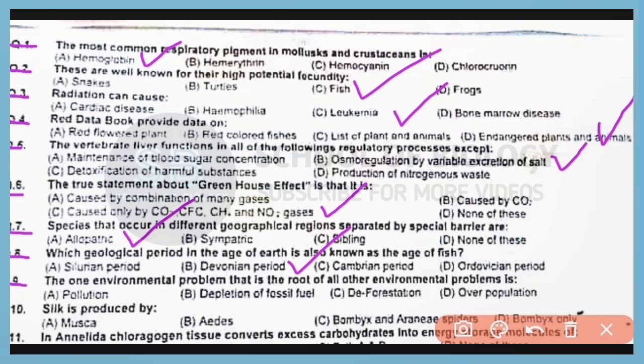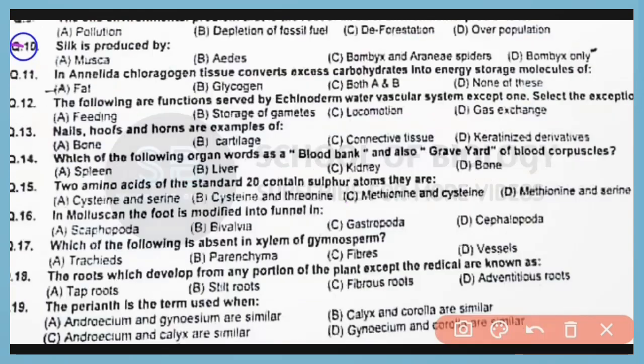Question number 9. The one environmental problem that is the root of all other environmental problems is overpopulation. Due to overpopulation, the remaining three problems occur.